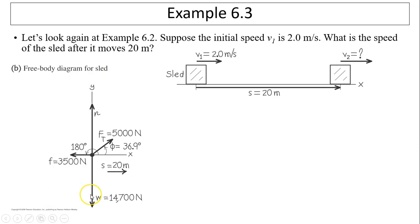So here is the free body diagram. Here is the tractor is pulling at 5,000 newtons at an angle of 36.9 degrees. There is a friction of 3,500 newtons. And there is the weight of the sled and its load is 14,700 newtons. And there is a normal force.